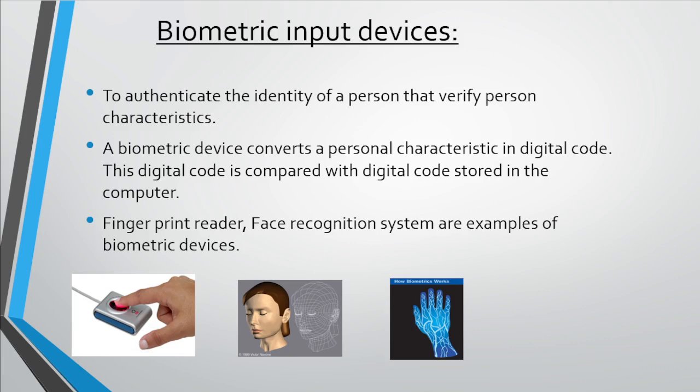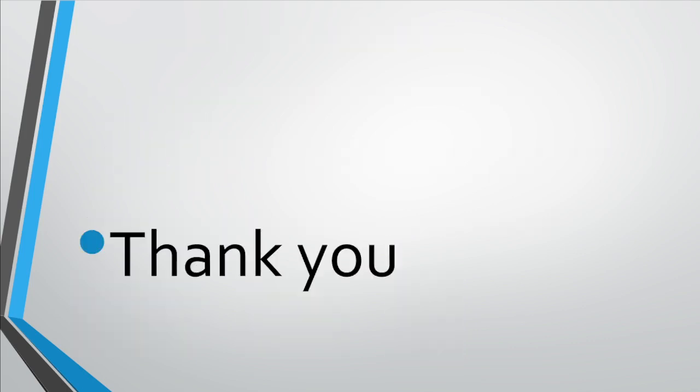Next is biometric input devices. Biometrics is a technology to authenticate the identity of a person by verifying their physical characteristics. It is a methodology in which we use the physical characteristics of a person to identify them. A biometric device converts personal characteristics into a digital code, which is compared with the digital code stored in the computer. Some examples of biometric devices are fingerprint reader and face recognition system. I hope students you understand all the input devices. Thank you.